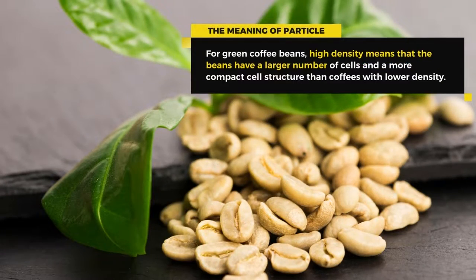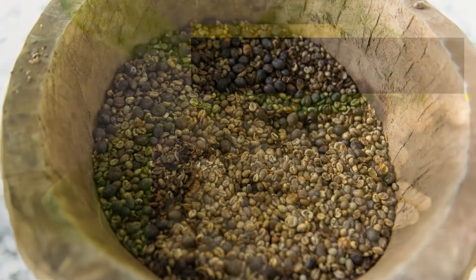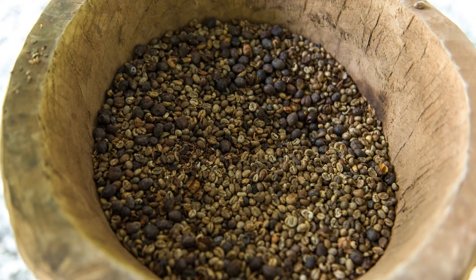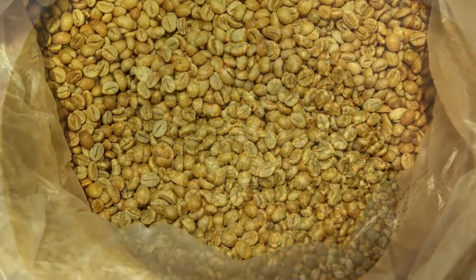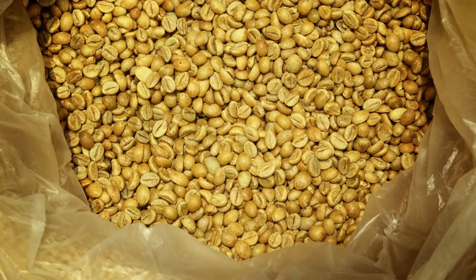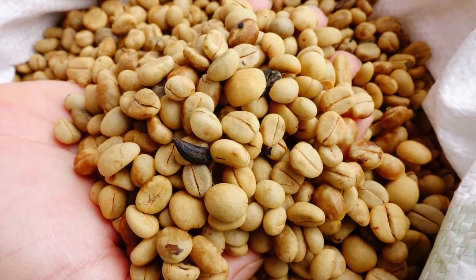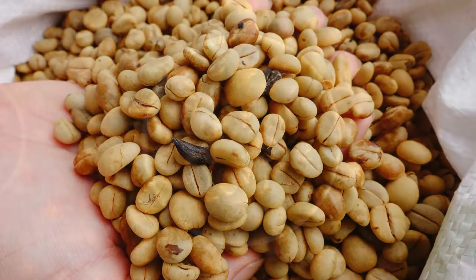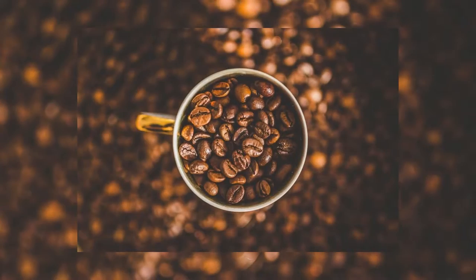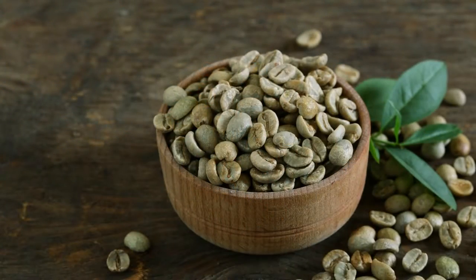For green coffee beans, high density means that the beans have a larger number of cells and a more compact cell structure than coffees with lower density. The way that a particle absorbs energy, experiences stress, cracks, and grows will be different than a particle with a lower density.